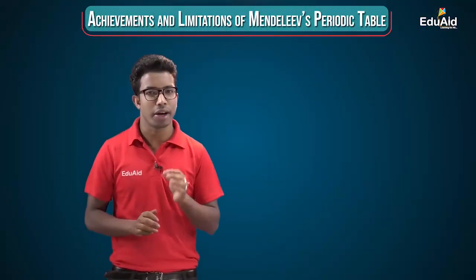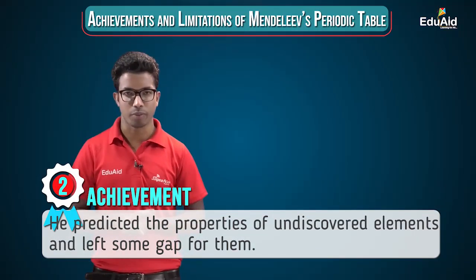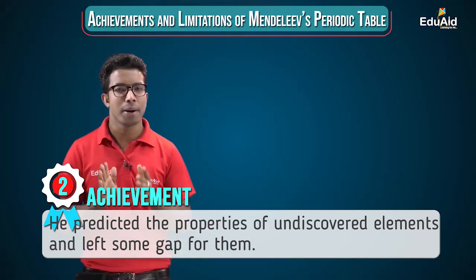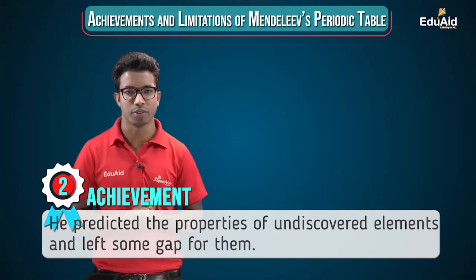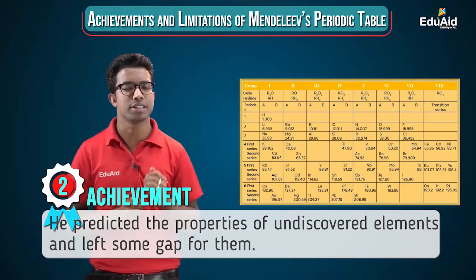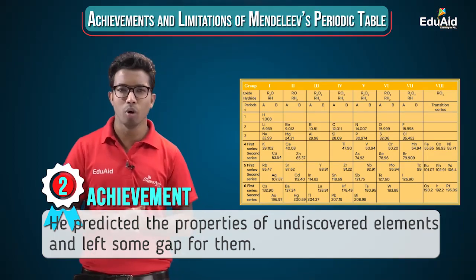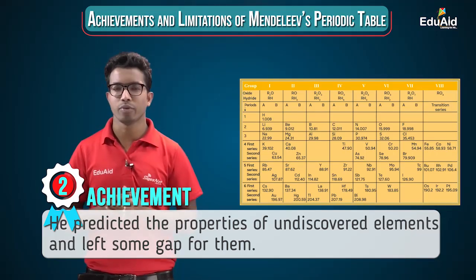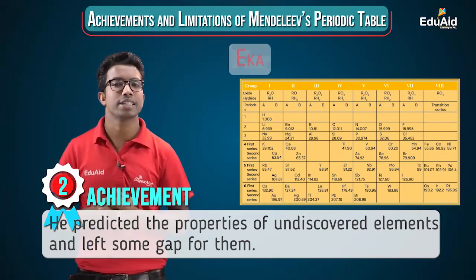Another major achievement: when Mendeleev was preparing his table, only 63 elements were known. Scientists like Newlands thought there would be no new discoveries, but Mendeleev believed otherwise. He left certain gaps in his table for undiscovered elements, gave those gaps names using the prefix 'Eka,' and even predicted their properties. Eka is a Sanskrit word meaning 'one.'